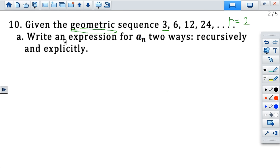So now to write it explicitly, let's do that first since we've had lots of experience with that. So it's a sub n equals the first term, which is 3, times the common ratio, which is 2, and then raised to the power of n minus 1. Super easy, right?